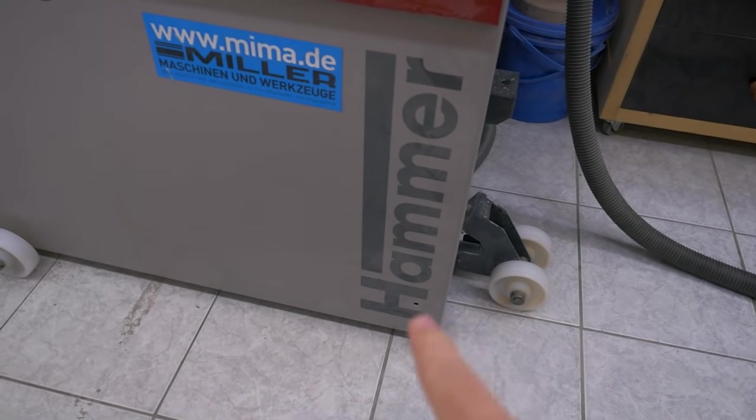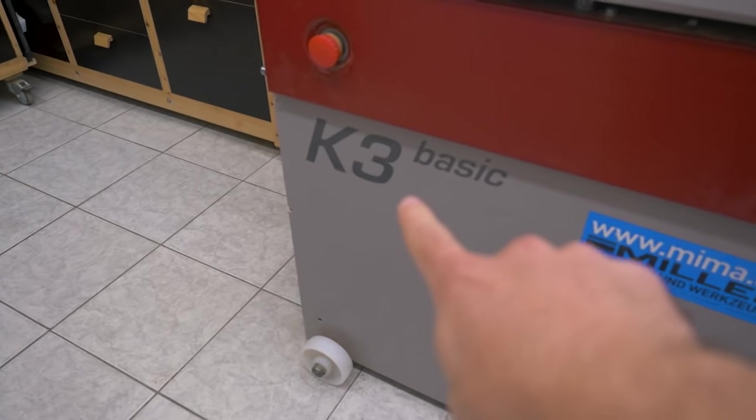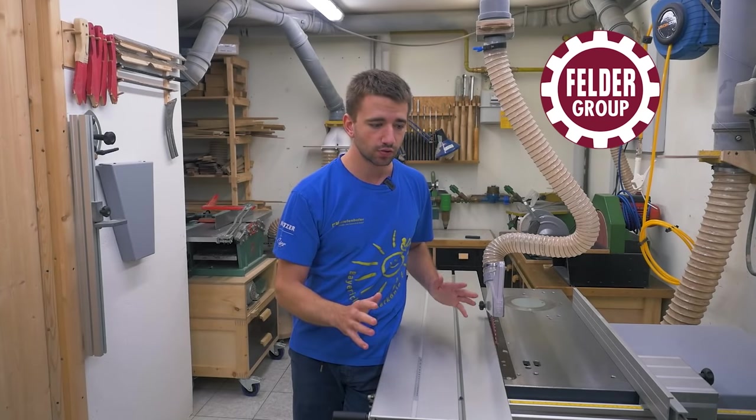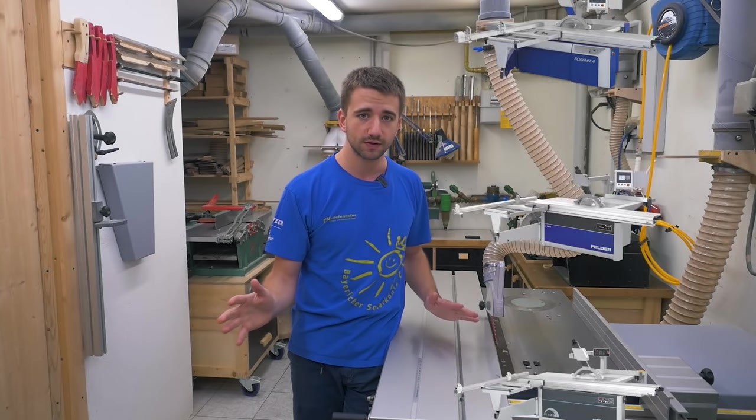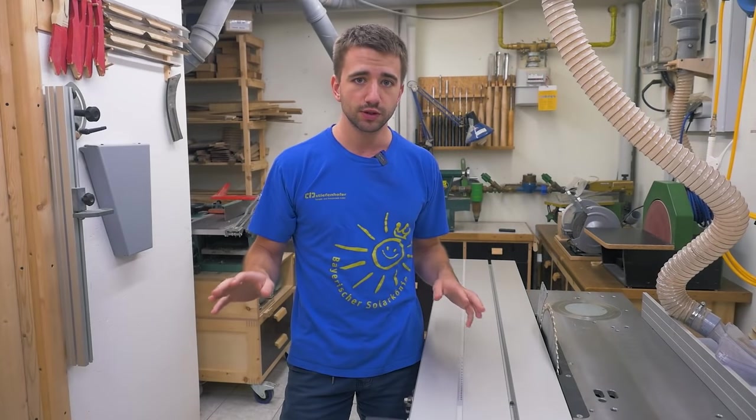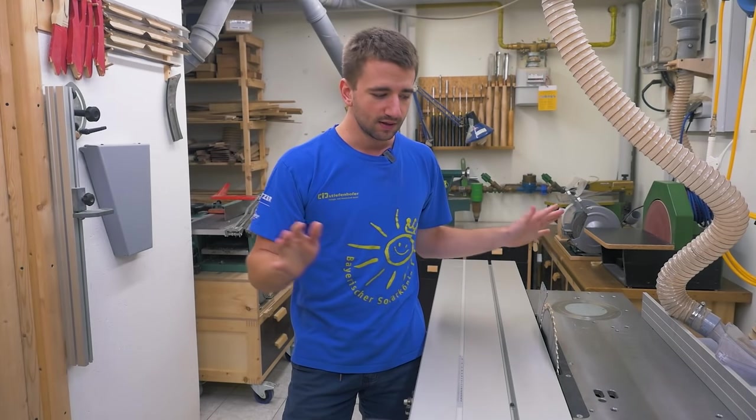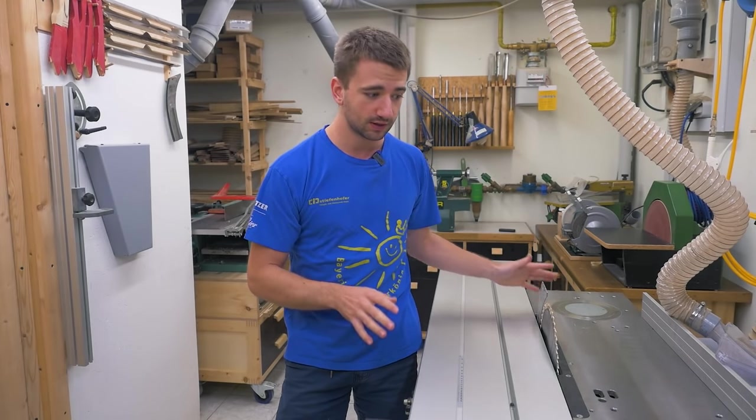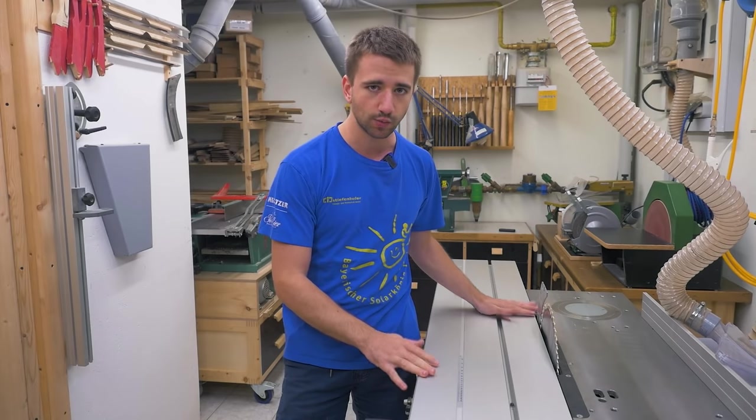So first of all, this saw is the Hammer K3 Basic. The saw is made by the Felder Group, and at the time of making this video, this is still the smallest saw they make. But for the average woodworker, this saw is by no means small. It also weighs over 250 kilograms, so it's still quite a beast.